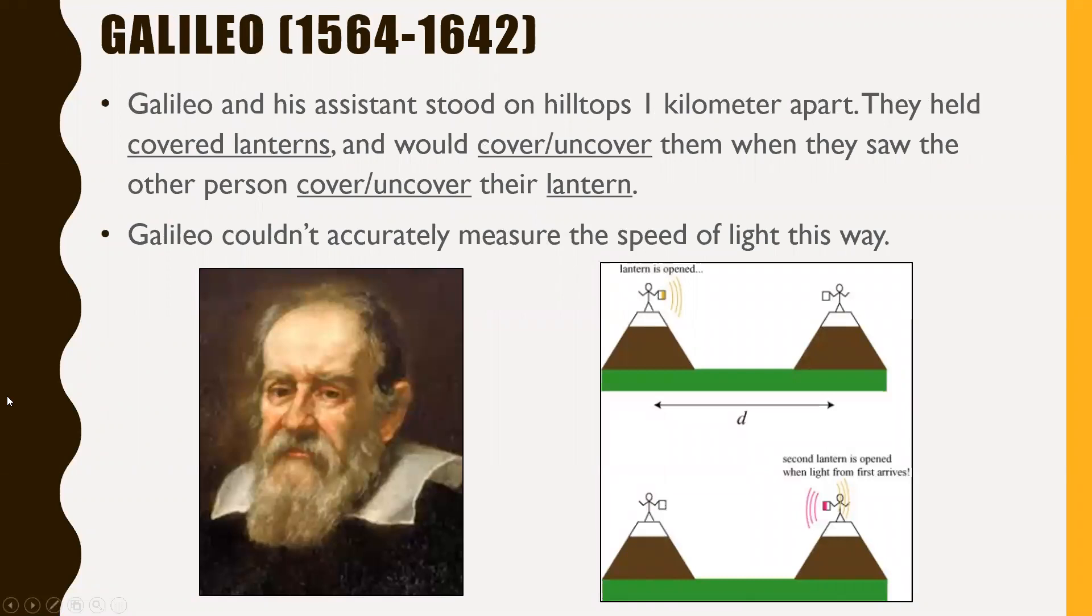Moving on. So Galileo was actually one of the first people that tried to measure the speed of light. Galileo and his assistant stood on hilltops one kilometer apart. They held covered lanterns, and then they would cover or uncover them when they saw the other person cover or uncover their lantern. So as one lantern was opened, the other person would open their lantern as soon as the light from that lantern arrived. And they knew the distance between the two hilltops, one kilometer of course, and they tried to measure the speed from that. Now, Galileo couldn't accurately measure the speed of light this way at all. Not really a big surprise there. His methodology was a little bit flawed. But he did try and he made a lot of notes regarding that.